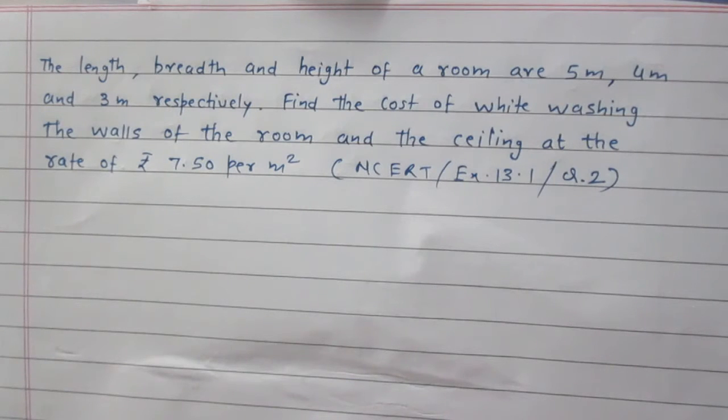And we are to calculate first area of the room with its ceiling and without its floor. Then we are to calculate the cost of whitewashing the room at the rate of Rs. 7.50 per meter square.